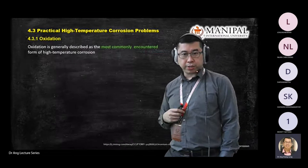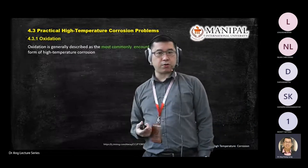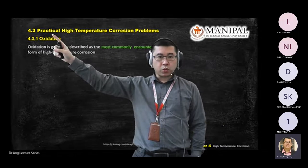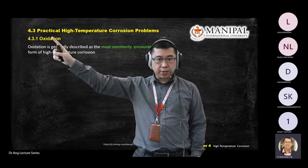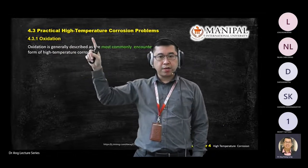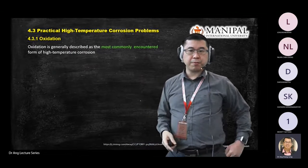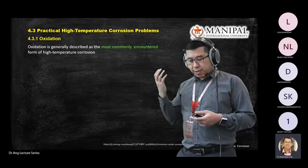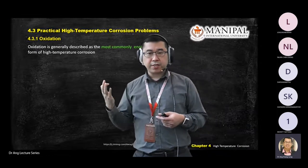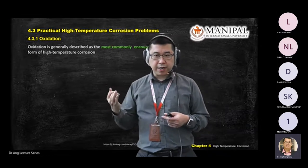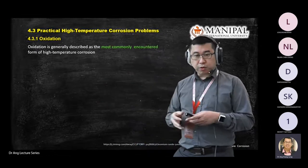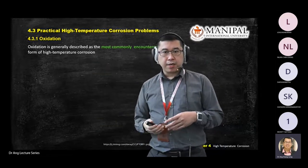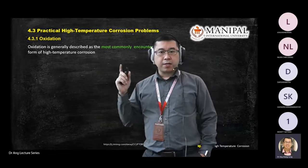Next, we talk about oxidation. We are entering the third section — practical high temperature corrosion problems. We talk about oxidation, carburization, sulfidation, and so on. The first one is oxidation. Oxidation is linked with oxygen — meaning your metal is going to capture oxygen to become MO. Metal M plus O₂ (or half O₂) becomes MO or MO₂. This falls under the oxidation section. This is the most common thing you will face when you use alloy in a high temperature operation.